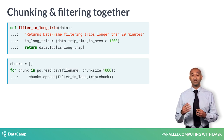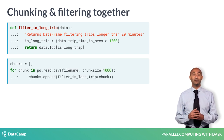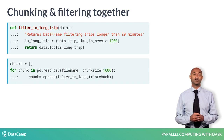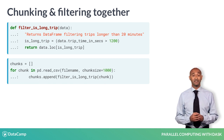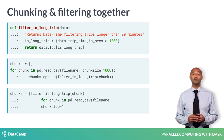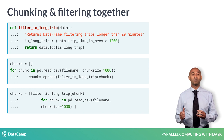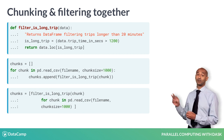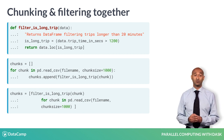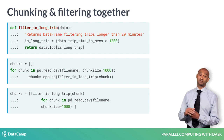Next, we make a list of dataframes called chunks by iterating over the output of read.csv, this time using chunks of 1,000 lines. Rather than initializing an empty list chunks and appending elements within a loop, we can also use a list comprehension to build the list. Remember, this list comprehension is equivalent to the preceding for loop.